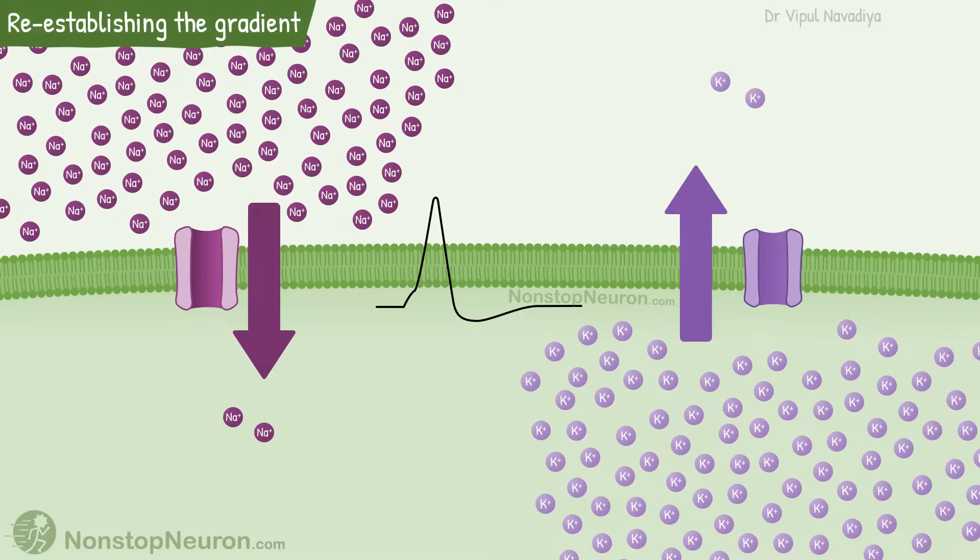During action potential, sodium enters the cell and potassium exits. This results in slight reduction in their concentration gradient. The thing that I want to highlight here is this reduction in gradient is very very small.